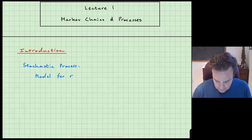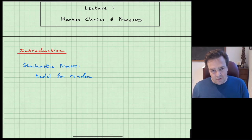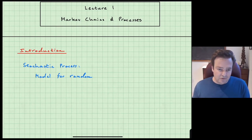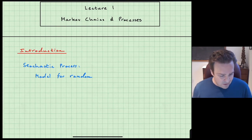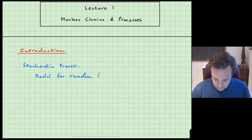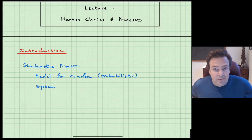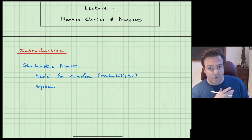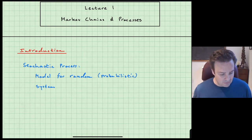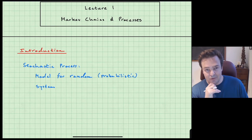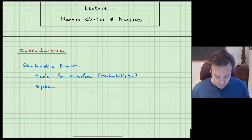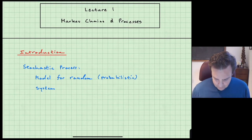I think the word 'random' here gets misunderstood — it did by me when I was a student. When you use a random number generator on a computer, you have a specific picture in mind, but this is a little less specific than that. Random really just means probabilistic in nature. So it's a model for a system that you can't — or maybe don't know how to — describe deterministically. You can only say something about the probability that it is in some certain configuration. You may have specific information about that probability; it's not completely random as I would have interpreted it as a student.